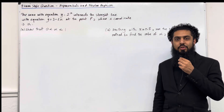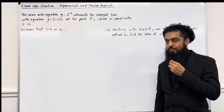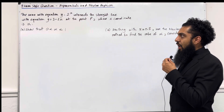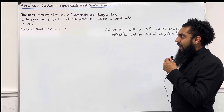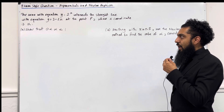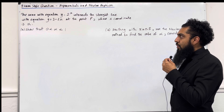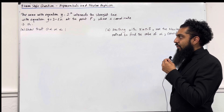Here is an exam-style question on exponentials and Newton-Raphson. The curve with equation y equal 2 to the power x intersects a straight line with equation y equal 3 minus 2x at the point P, whose x coordinate is alpha.